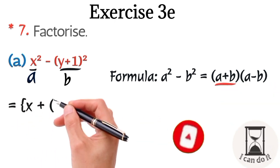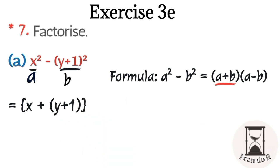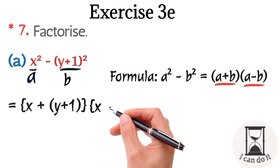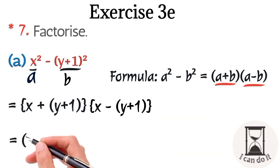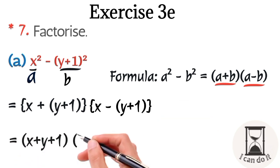Here, a plus b would become x plus (y plus 1) and a minus b is x minus (y plus 1). Now we just have to simplify it by multiplying the negative sign with that bracket to open it, and this is our answer.